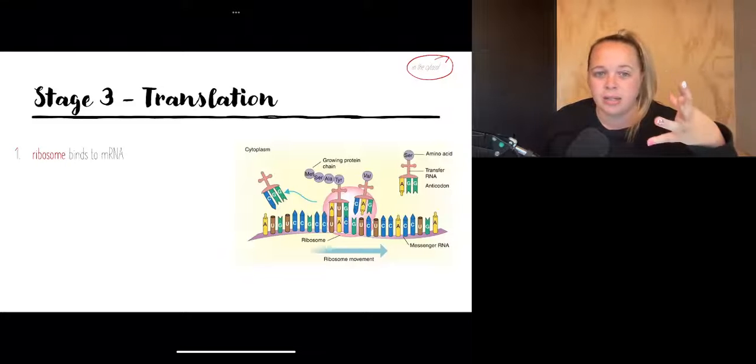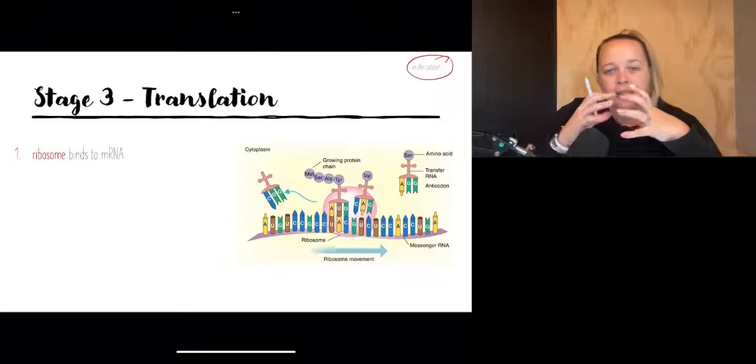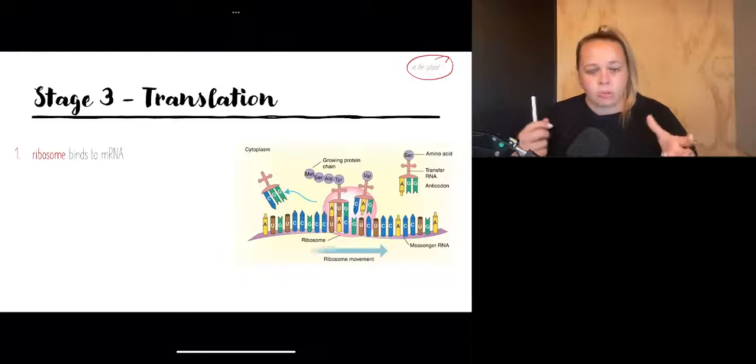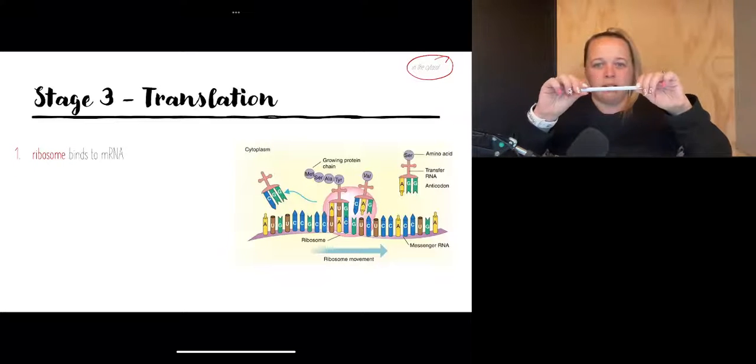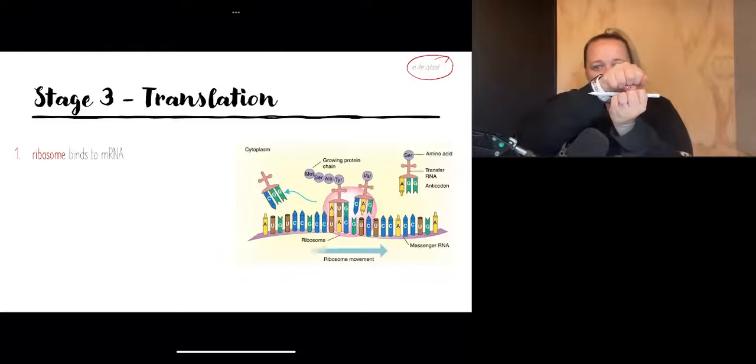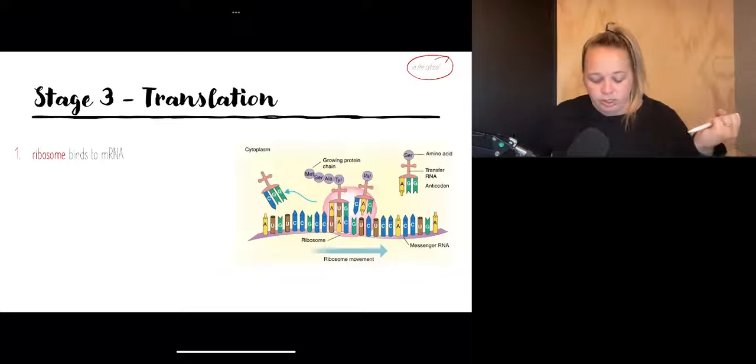The very first one is that the ribosome comes along and binds itself to the mRNA. So a ribosome is kind of like a little hamburger structure and the mRNA is here in the middle and it kind of clamps itself on like this. So that's what's happening first - the ribosome is binding itself to the mRNA.